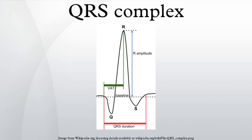The QRS complex is a name for the combination of three of the graphical deflections seen on a typical electrocardiogram. It is usually the central and most visually obvious part of the tracing. It corresponds to the depolarization of the right and left ventricles of the human heart.